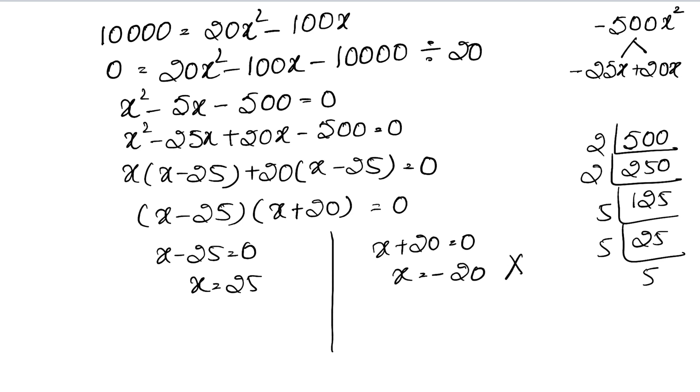The number of students cannot be negative, so x equals 25. The total number of students who went on the picnic is 25 minus 5 equals 20 students.